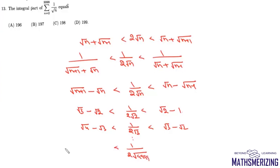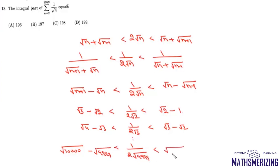...then we can write √10000 − √9999 < 1/(2√9999) < √9999 − √9998.